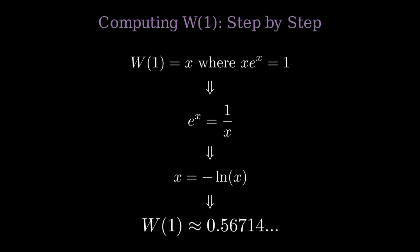Let's work through a concrete example to see how this function actually works in practice. To find W of 1, we start with the definition W of 1 equals some value x where x times e to the x equals 1. Rearranging this equation, we get e to the x equals 1 over x. Taking the natural logarithm of both sides gives us x equals negative natural log of x. This transcendental equation has a solution of approximately 0.56714.